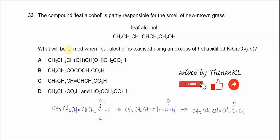What will be formed when the leaf alcohol is oxidized using excess hot acidified potassium dichromate?